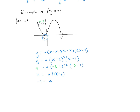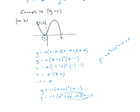Therefore A = −1. So the equation is Y = −(x + 2)²(x − 1). If they ask you to write it in the form Y = Ax³ + Bx² + Cx + D, you just multiply it all out: Y = −(x² + 4x + 4)(x − 1), giving Y = −x³ − 3x² + 4. But if they don't ask for that, it's totally fine to leave it in factored form.